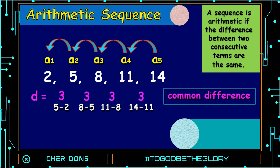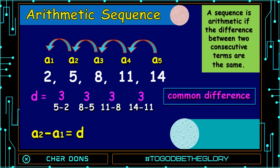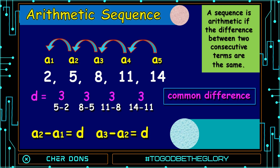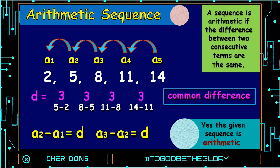The answer is called the common difference, represented by small letter d. How to find the common difference: get the value of the second term then subtract the first term — A2 minus A1 equals d. Or get the third term minus the second term — A3 minus A2 equals d, and so on. Yes, the given sequence is arithmetic because the difference between two consecutive terms is the same.